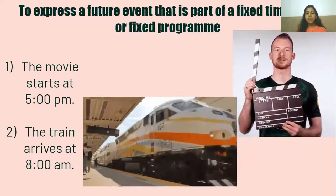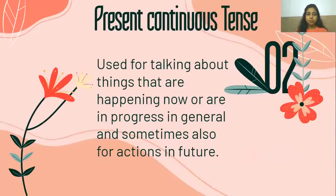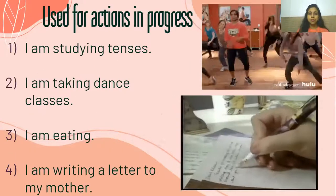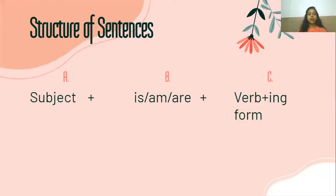Next we have the present continuous tense. This is used for talking about things that are happening now or are in progress in general, and sometimes also for actions that will happen in the future. The structure is: subject plus is/am/are — just like we saw in the simple present tense — then verb plus the -ing form. For example, walk becomes walking; talking, writing, speaking. So: subject plus is/am/are plus verb plus -ing form.